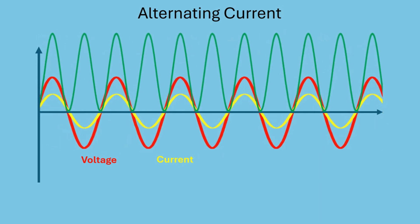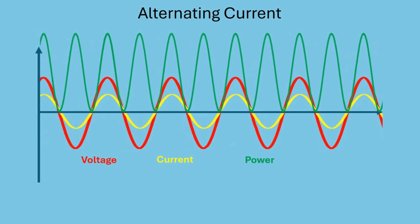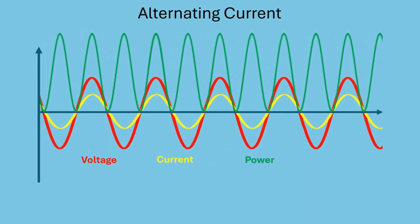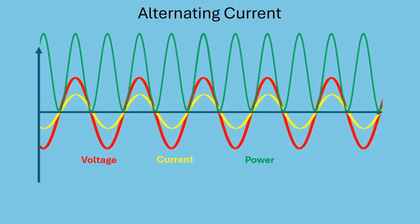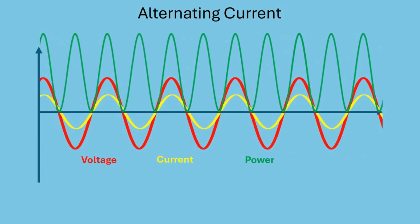Notice how they align perfectly. When voltage is positive, current is positive, and when voltage is negative, current is negative. If we multiply these together, the resulting power is always positive. That's because voltage and current are in sync.